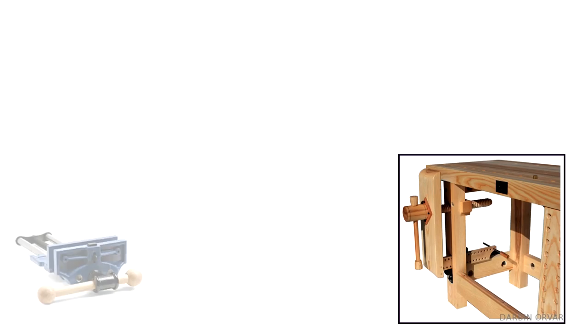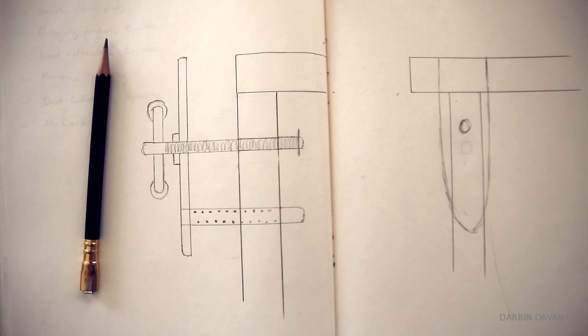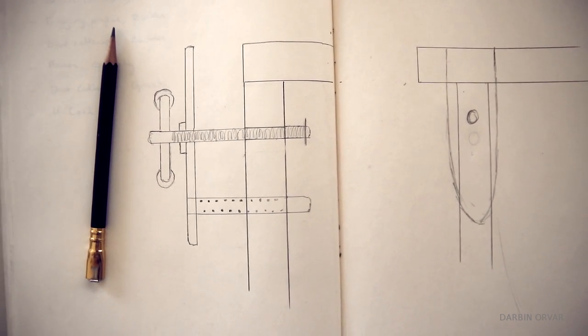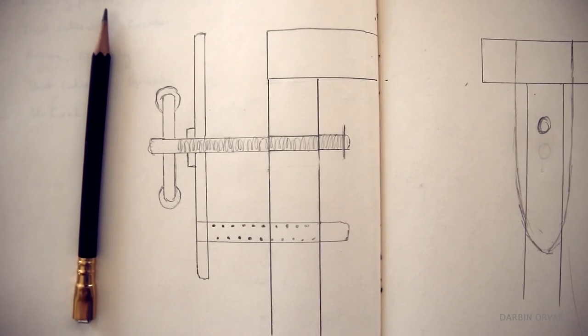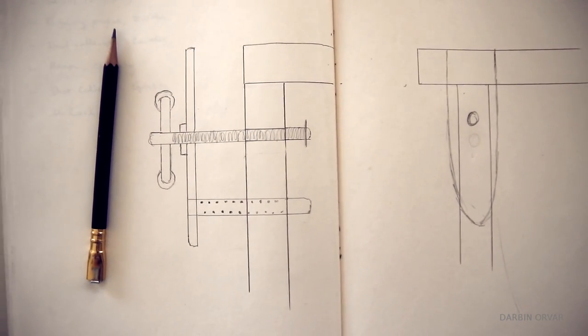Now there are obviously a lot of different options when it comes to vises, but for this bench and really for the whole shop in general I really want to go authentic and try out different things. So I thought what a perfect opportunity to make a leg vise with a wooden screw. This video is a little experimentation in making wooden screws and figuring this out.